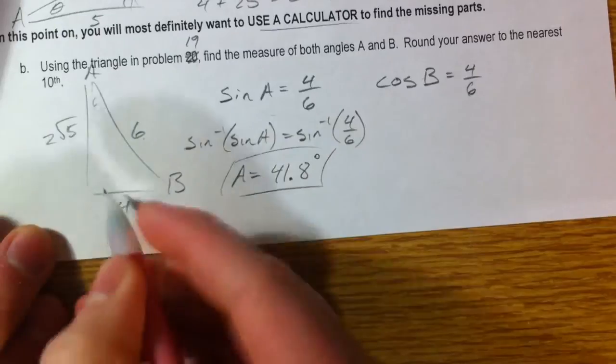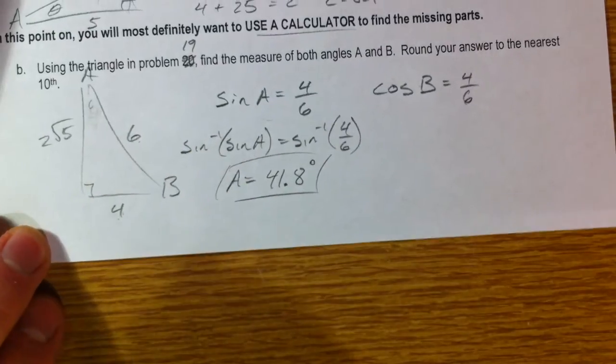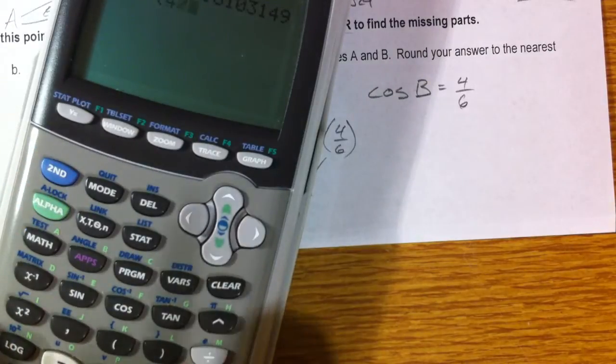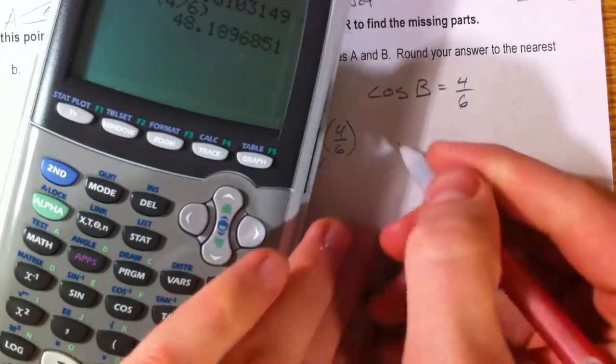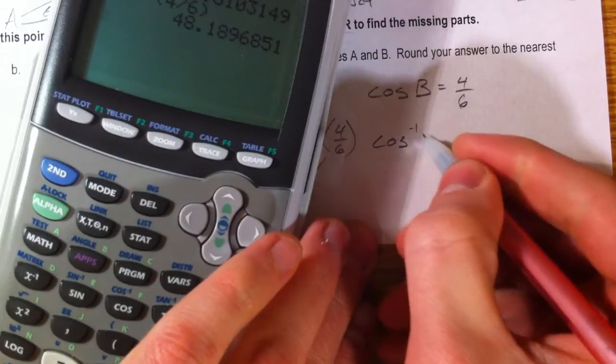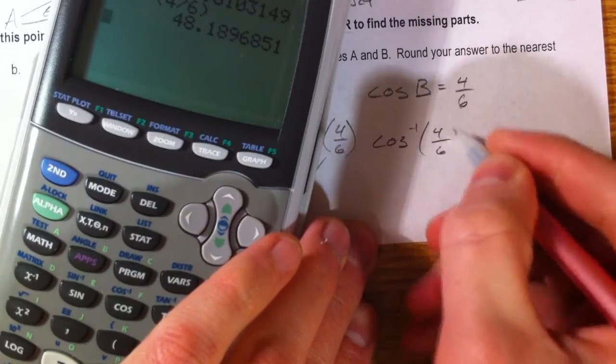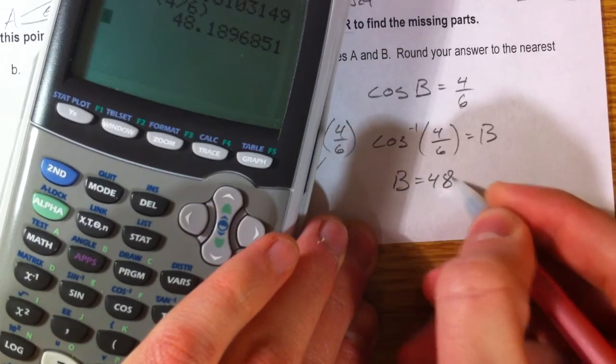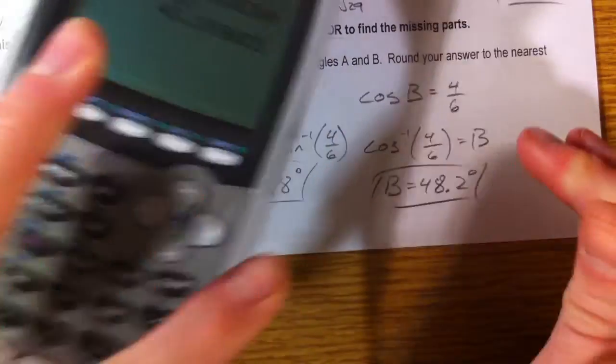Now, you can just subtract, because we know it's a right triangle, to find the other one. Or we could hit inverse cosine of 4 over 6. So B is 48.2 degrees. Let's keep going.